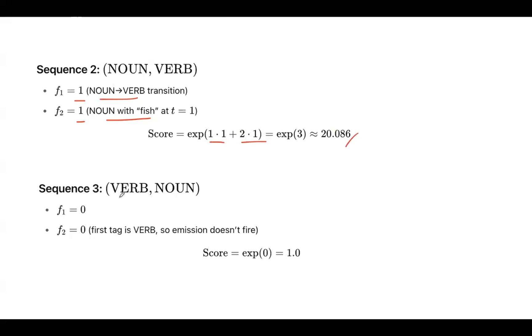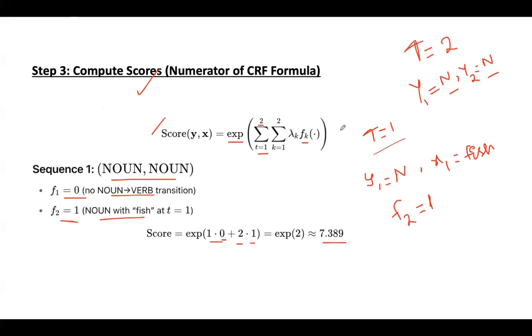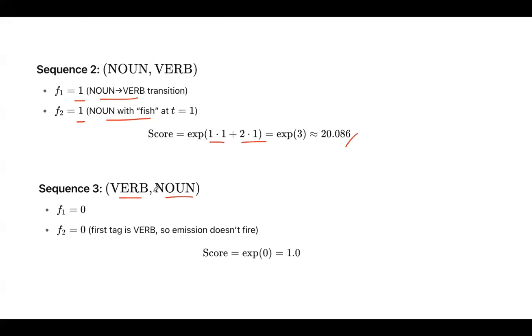Then take the third sequence, verb followed by noun. There is no such transition here. According to our function, it should be noun followed by verb only. As there is no match, as there is no verb to noun transition, f1 value is 0.